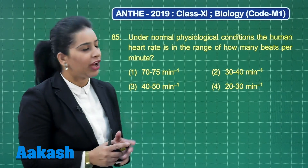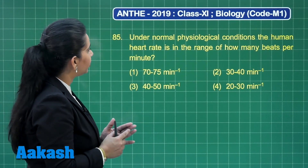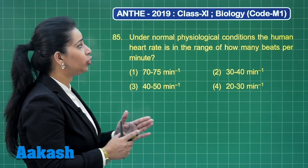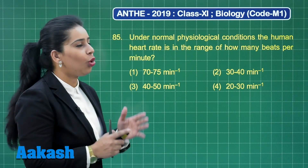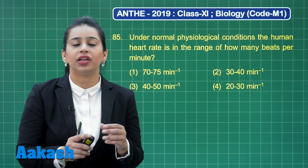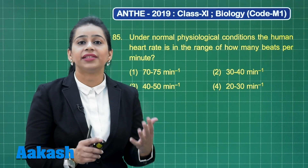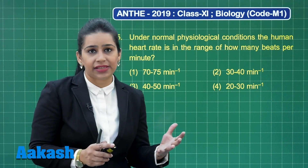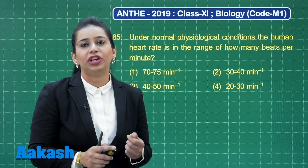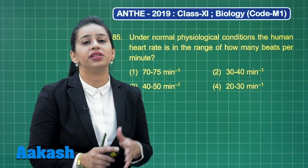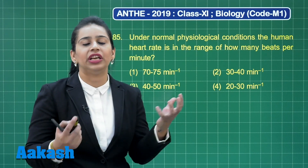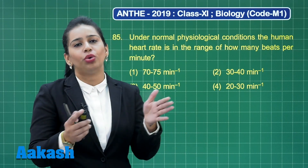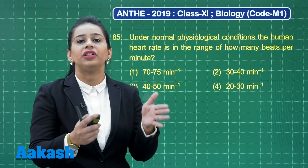Question number 85 asks: under normal physiological conditions, the human heart rate is in the range of how many beats per minute? As we have already learnt, the human heart is myogenic and the SA node — which is a specialized nodal tissue that is auto-excitable — can generate the heartbeat or initiate the impulse without the involvement of the brain, but the brain and chemical control are also required to regulate the heartbeat and its conduction.